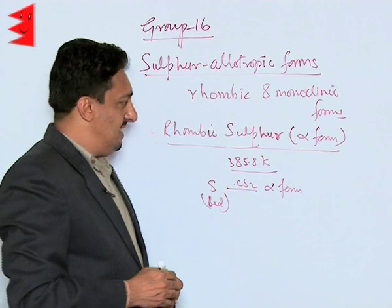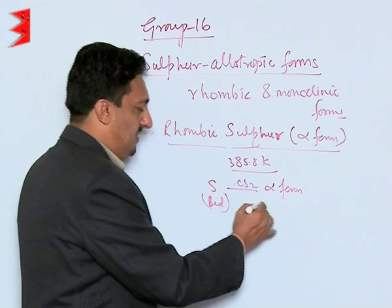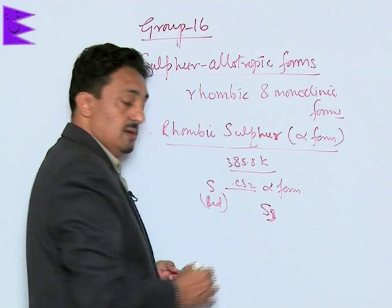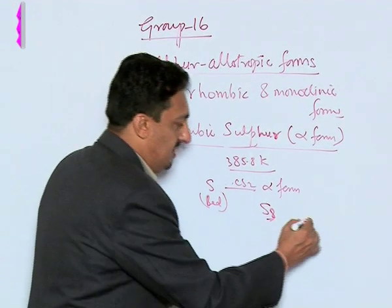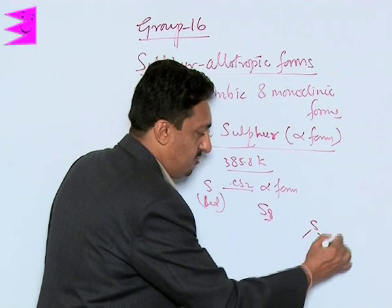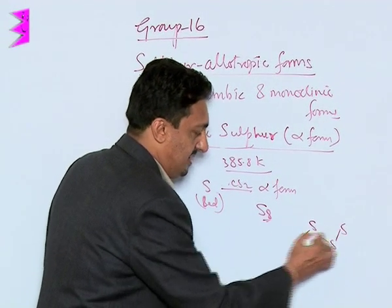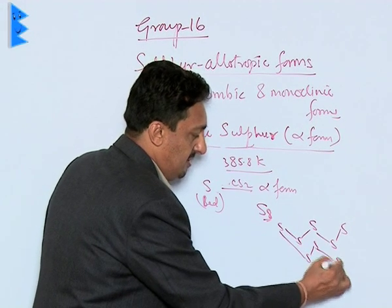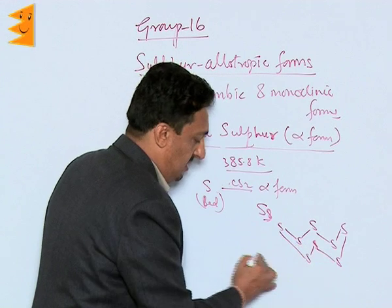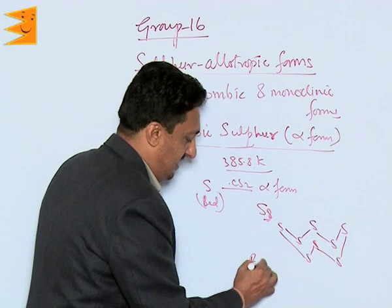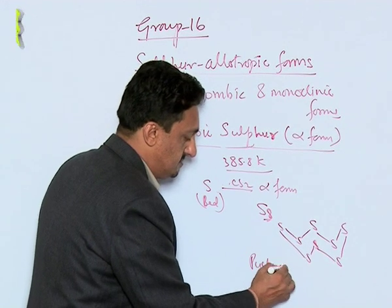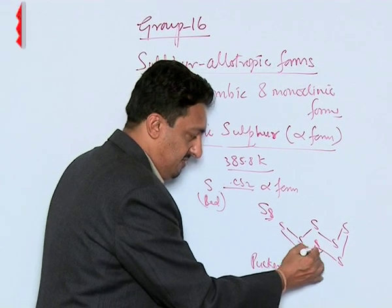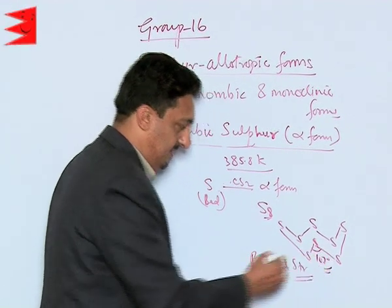Rhombic Sulphur has an S8 structure in which each Sulphur atom is bonded to two other Sulphur atoms, existing in a crown shape or puckered ring structure with bond angles of 107 degrees.